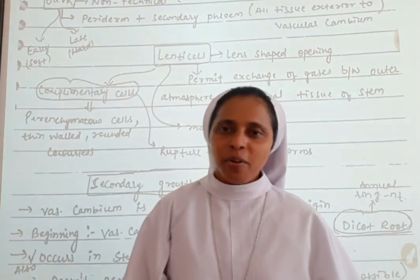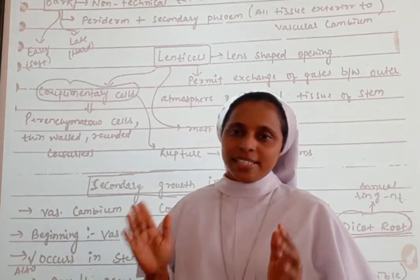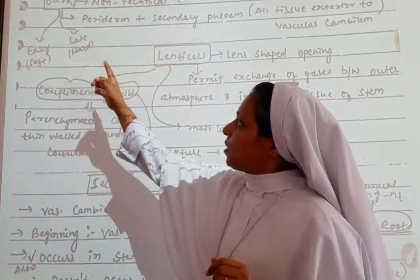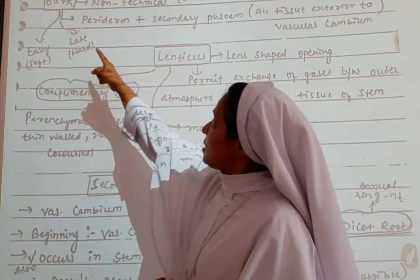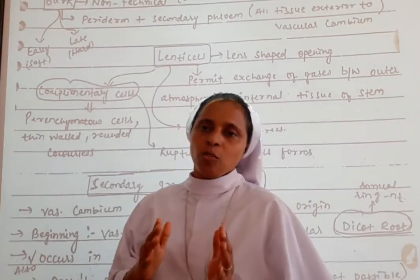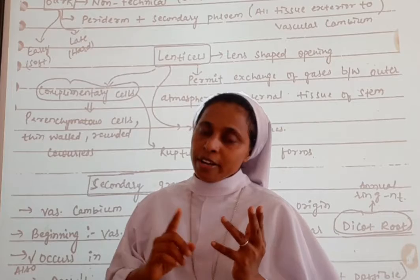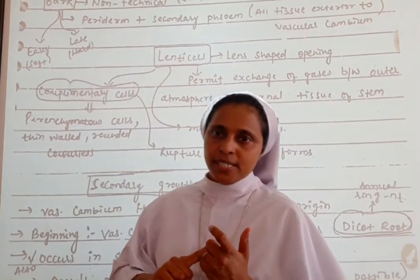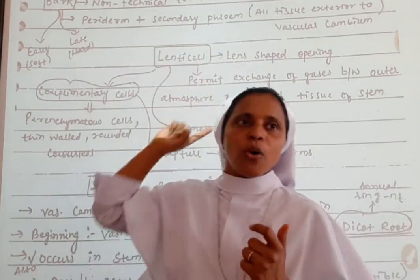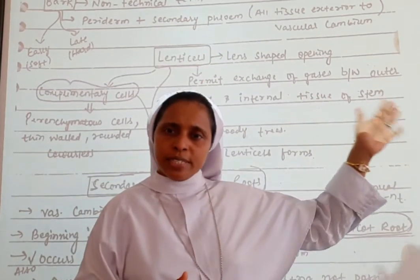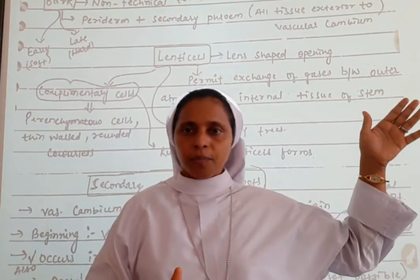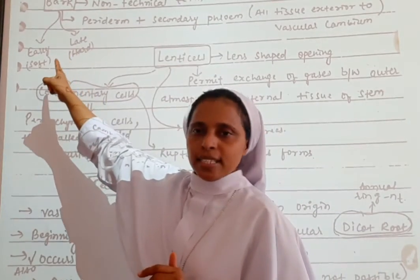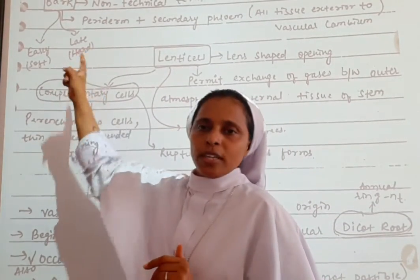Now let us learn about bark. Bark is a non-technical term. The bark consists of periderm — which includes phellem, phellogen, and phelloderm — and secondary phloem. All tissues exterior to the vascular cambium constitute bark. There is soft bark, called early bark, and hard bark, called late bark.